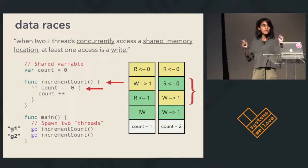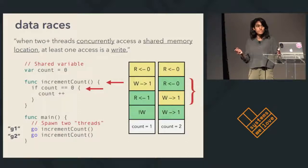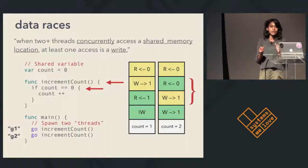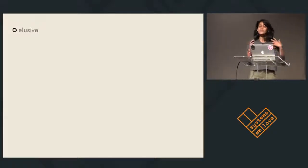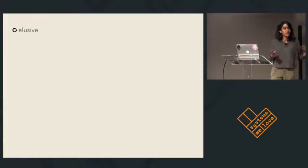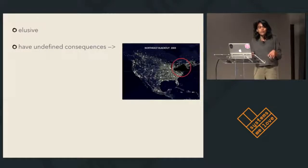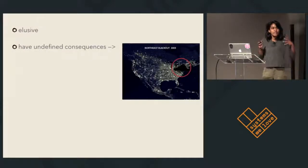When you have two or more threads — which can be user space or system threads — and they concurrently access a shared memory location, and one of those accesses is a write, that's what we call a data race. This example illustrates one particularly intriguing property of data races: they're elusive. Is my program going to have a final value of one? Is it going to have a final value of two? I don't know. We'll have to run it. Another interesting property of data races is that they have wild, undefined consequences.